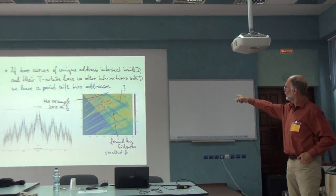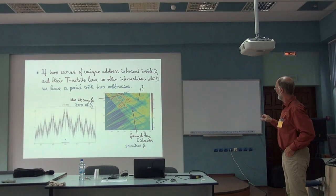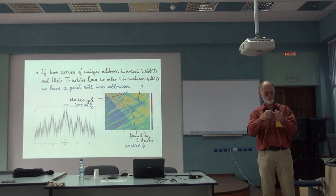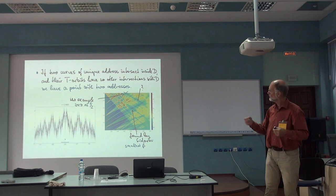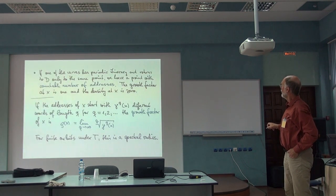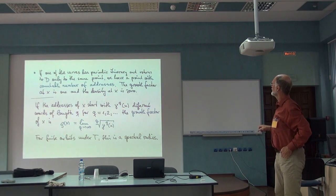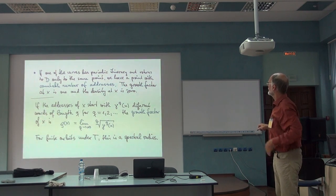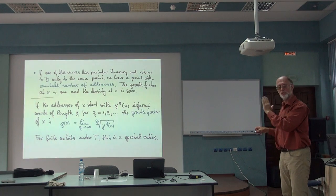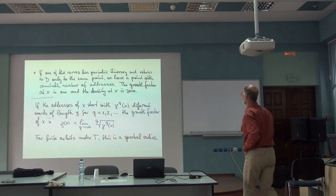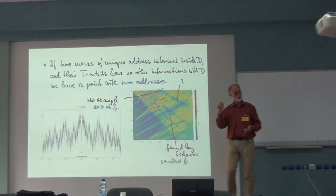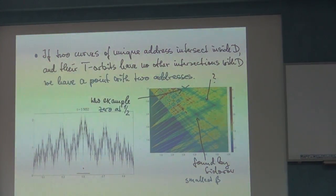They are well seen, these blue curves are all these which have only one address, one representation in the number system. And here inside we must have at least two addresses because already the first step is possible in two ways. We have two mappings going out from the point of the yellow triangle. Well there are some technical things I don't want to go into technical details. Here for instance if one address has periodic itinerary, periodic address and the other one has pre-periodic then you get a countable number of addresses.